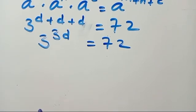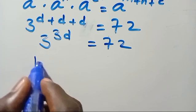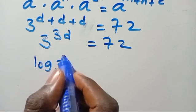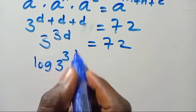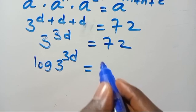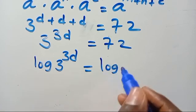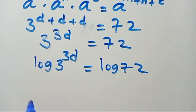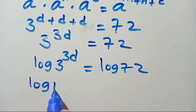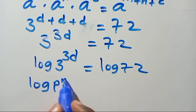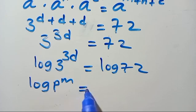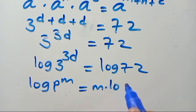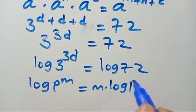Then let's introduce log to both sides. So from here we have log of 3 to the power of 3D equals log 72. Recall that log P to the power of M — the power comes down to give M multiplied by log P.